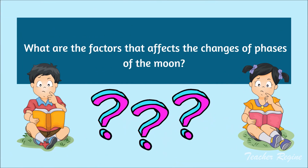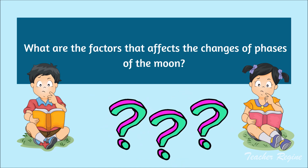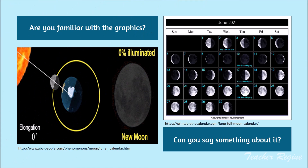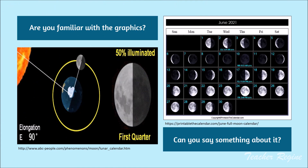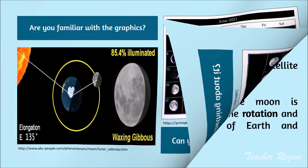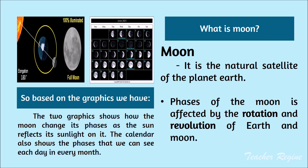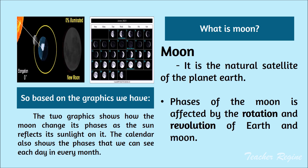What are the factors that affect the changes of the phases of the moon? Based on the graphics that we have, the two graphics show how the moon changes its phases as the sun reflects its sunlight on it. The calendar also shows the phases that we can see each day in every month.